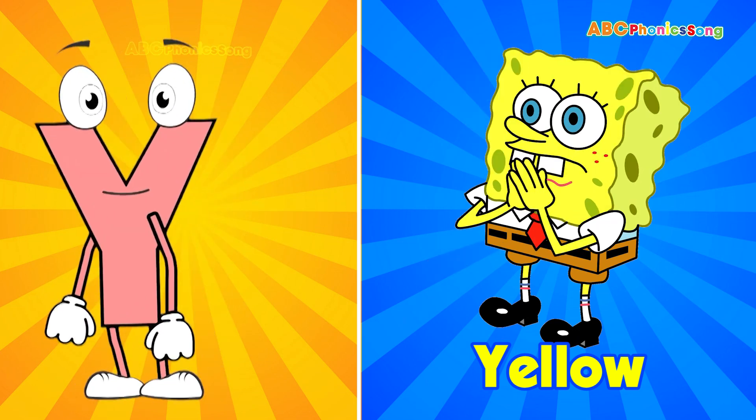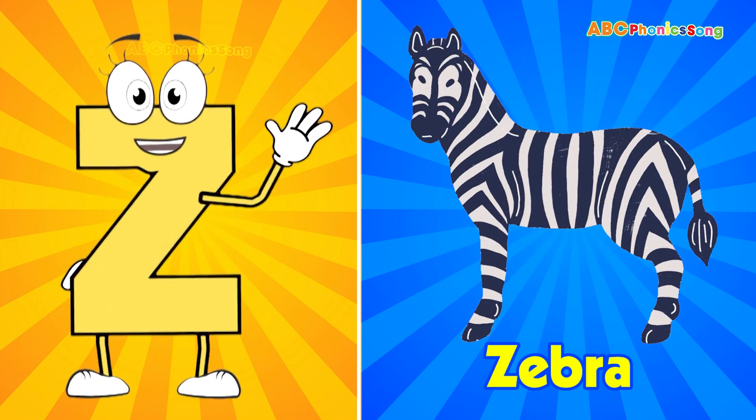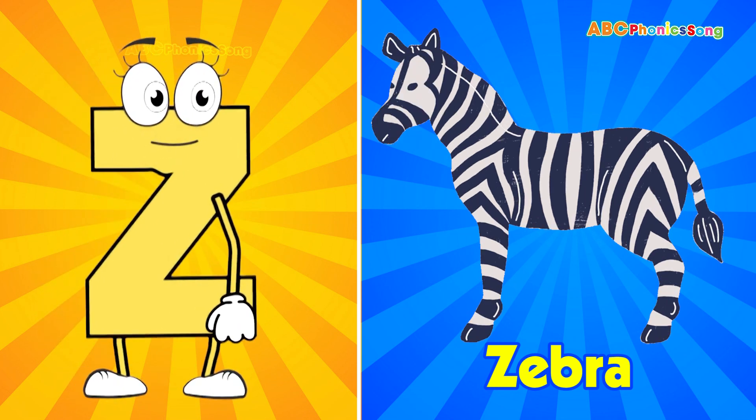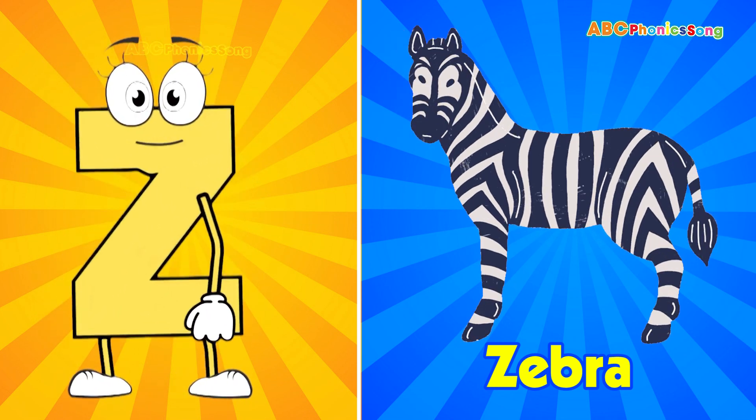Y is for yellow, y-y-yellow. Z is for zebra, z-z-zebra.